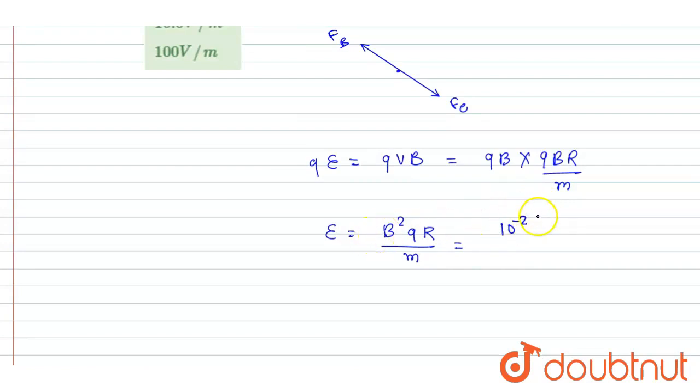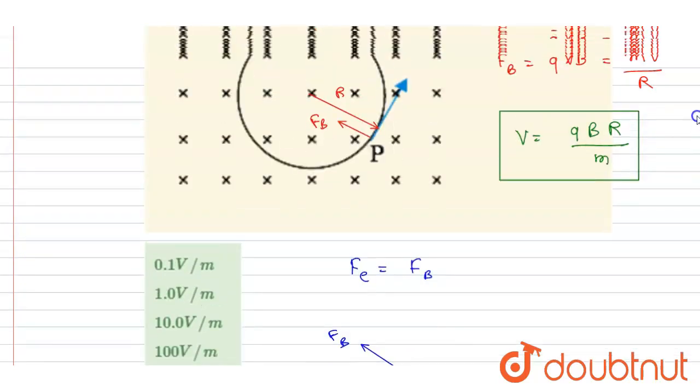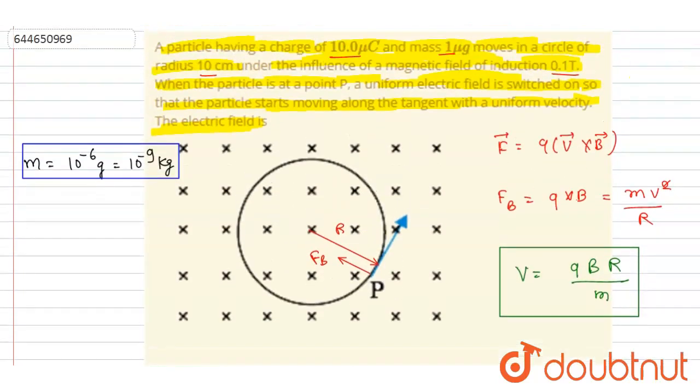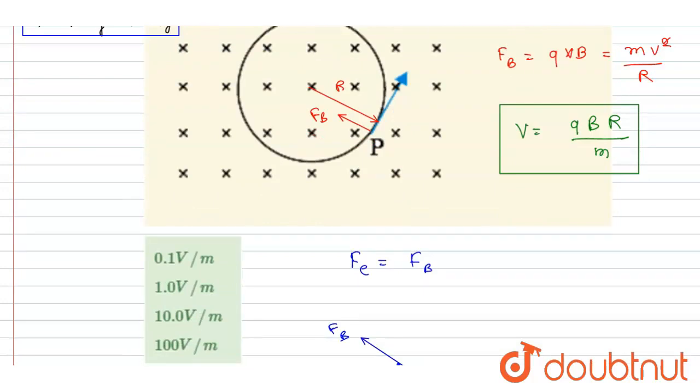Square of this, it will be this. The B is 1/10, so square of it, it will be this. 10 microcoulomb, so it is 10^-5 coulomb. Radius, if you see, is also given: radius is 10 centimeter, that is 1/10 meter.